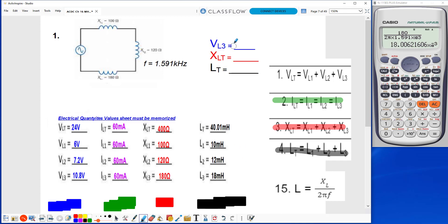All right, so the values I'm looking for that will go on your chapter 16 math handout answer sheet assignment on canvas are VL3, XLT, and LT.